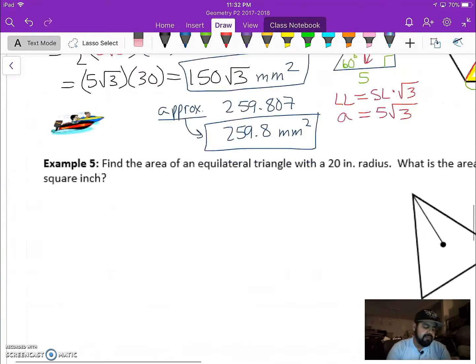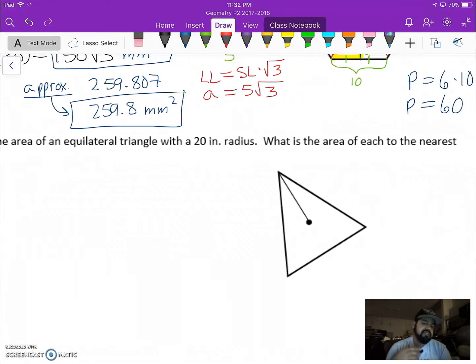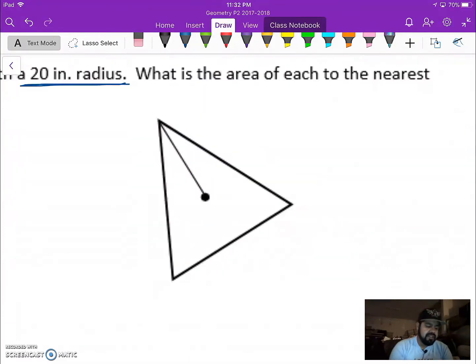So the last one here, example five. I want us to find the area of our equilateral triangle. Now some of you will be tempted to use the one half base times height. We're trying to learn how to use the apothem and perimeter, so I highly suggest you try to use that instead. So if you look right here, we tell you that the radius is 20. So that means that this length here is 20. Now I can draw that in two more spots. I can draw that right here as well as right here.